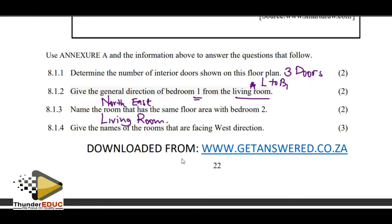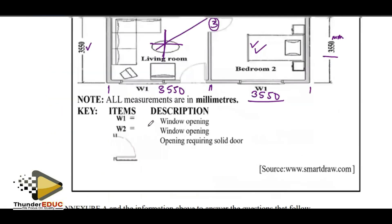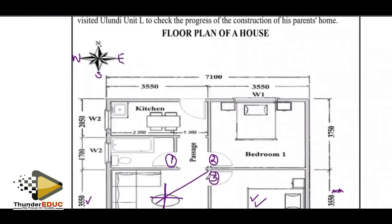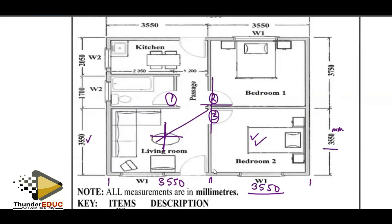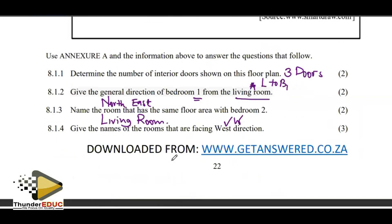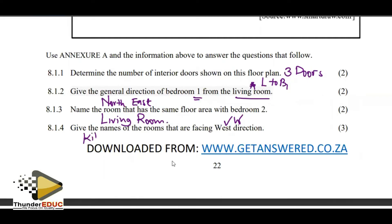Give the names of the rooms that are facing west — those on the western side. We draw the compass in the middle of the house. On the west side, the rooms we have are the kitchen, the toilet, and the living room.